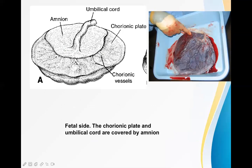On the fetal side of the placenta, the chorionic plate is visible with the umbilical cord attached to it. The outer membrane is called amnion. The chorionic blood vessels are visible on the surface — they converge together and travel into the umbilical cord. In a real placenta specimen, you can clearly see the chorionic blood vessels and the umbilical cord attachment, and the separated membrane is the amnion.